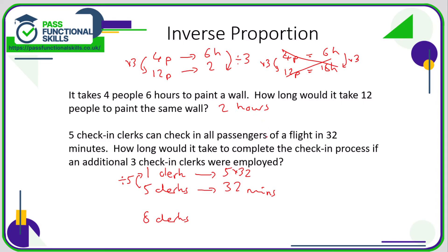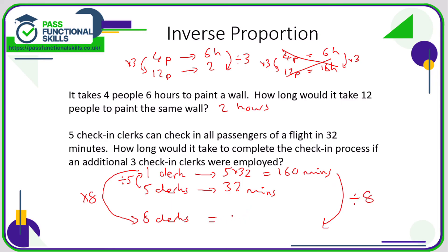If one person takes 160 minutes, how long will it take 8 clerks? We have 8 times more people, so it will take 8 times less time: 160 divided by 8 is 20 minutes. So the 8 clerks will take 20 minutes. With inverse proportion, think logically — more people doing a job means the job gets done in less time.